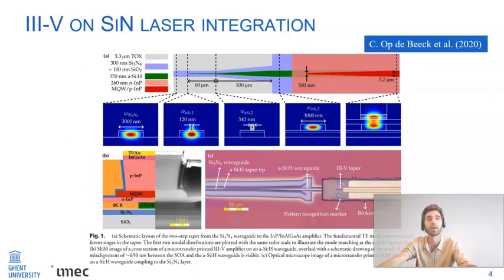We have overcome this challenge by transitioning to another intermediate layer with a larger index. In this work by Camille from our group, an amorphous silicon layer had been deposited with plasma-enhanced chemical vapor deposition. As opposed to the 3-5 amplifier, this layer is easier to couple to from our nitride platform and then serves as a good coupler to our amplifier because of the increased refractive index.